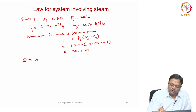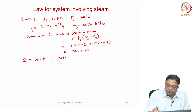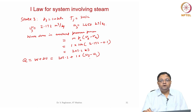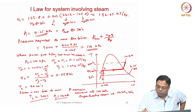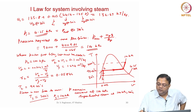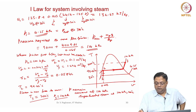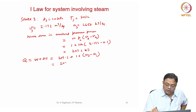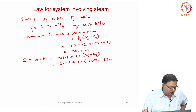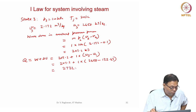Heat transfer by the first law: Q = W + m·(u3 − u1) = 207.2 + 1·(2658 − 132.67) = 207.2 + 2525.33 = 2732.73 kJ. Note that the total change in internal energy accounts for both the constant volume process (state 1 to 2) and the constant pressure process (state 2 to 3), so we use u3 − u1 for the full change.